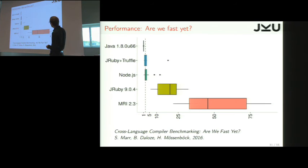This is the standard implementation. We see at the median, it's 40 times slower. So that's pretty slow. And then we have JRuby, another implementation on the JVM, which is already a bit better, but it's still 20 times slower than Java.